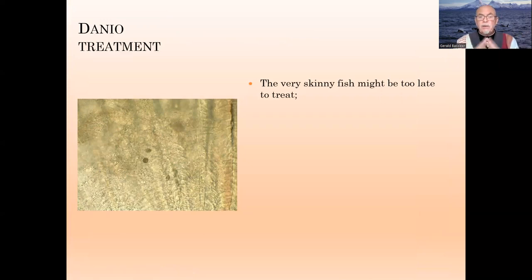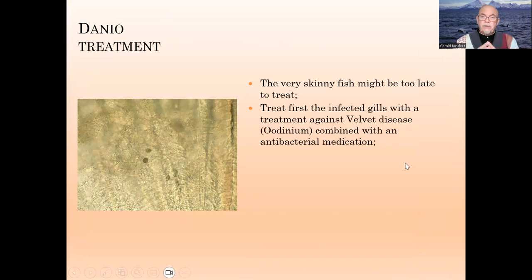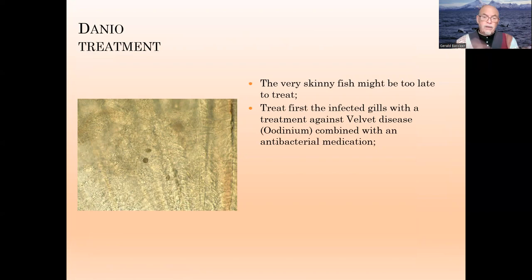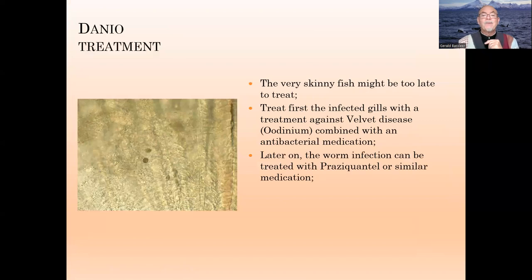For the very skinny, weak fish it might be too late — it is better to put them to sleep. Try first to treat the infected gills, because that is usually where the fish is dying from. You have to treat against the velvet disease (odinium), so you can combine an antibacterial treatment together with an odinium treatment. You can get these through your pet shop, which should have a good range of velvet disease treatments available. Ask them for a combination with antibacterial medication. Later on, you can treat the worm infection — for example with praziquantel or a similar medication.